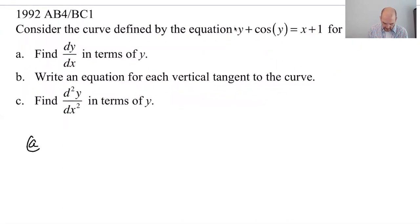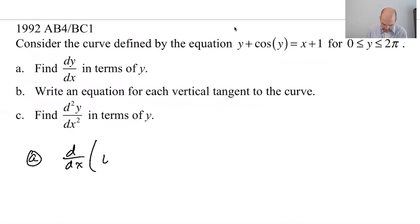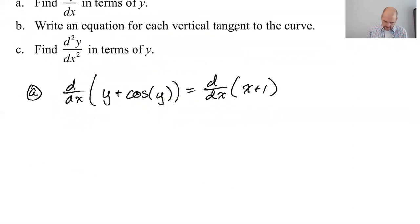So let's take a look at the first part. So part A, we're going to find d/dx because it's still x is the independent variable, y is the dependent variable, of y plus cosine of y is equal to d/dx of x plus 1.